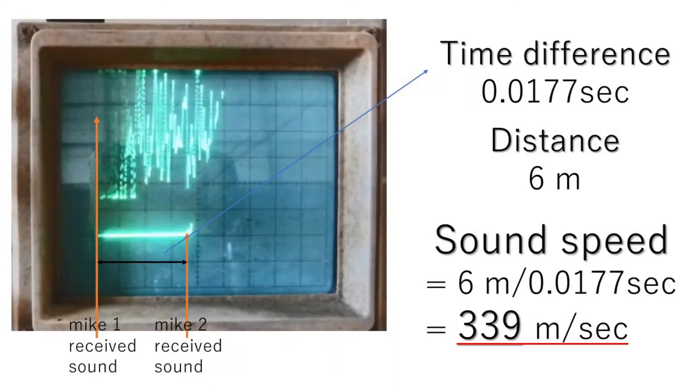The speed of sound is calculated to be 339 meters per second.